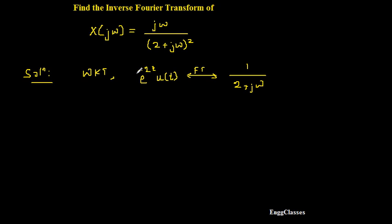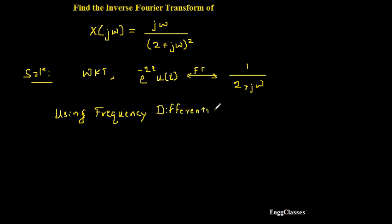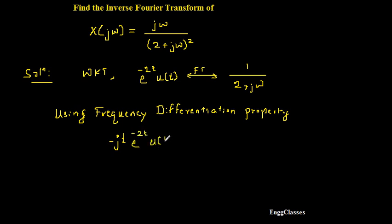Now I will make use of the frequency differentiation property. As per this property, multiplying by -jt in the time domain is equivalent to differentiating the signal in the frequency domain. So applying the frequency differentiation property, -jt · e^(-2t) u(t) corresponds to d/dω of 1/(2 + jω) in the frequency domain.